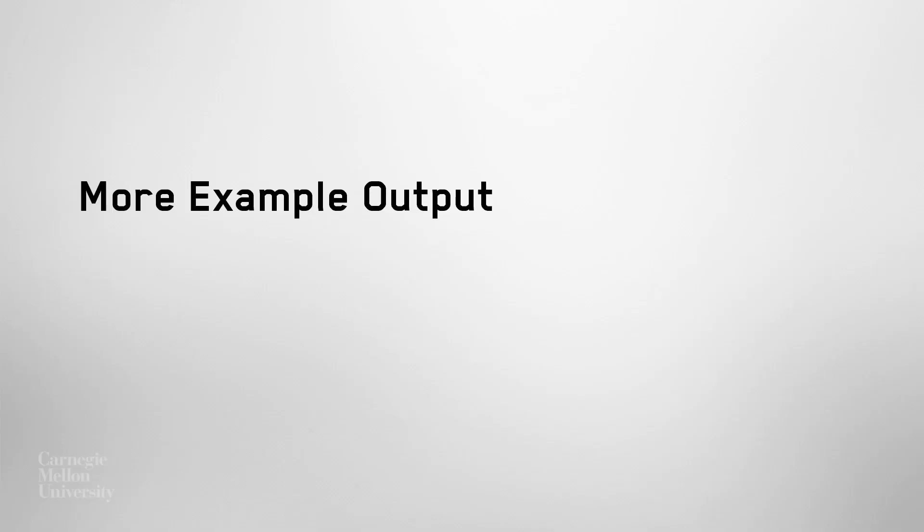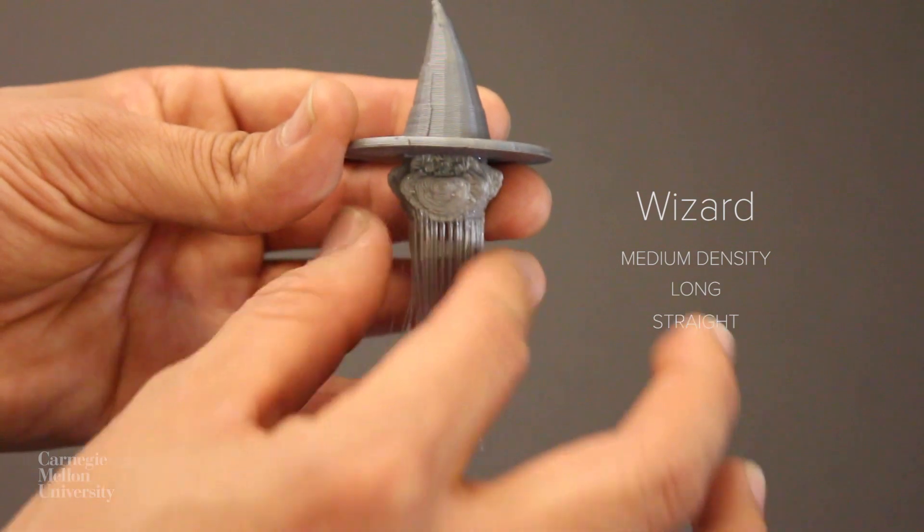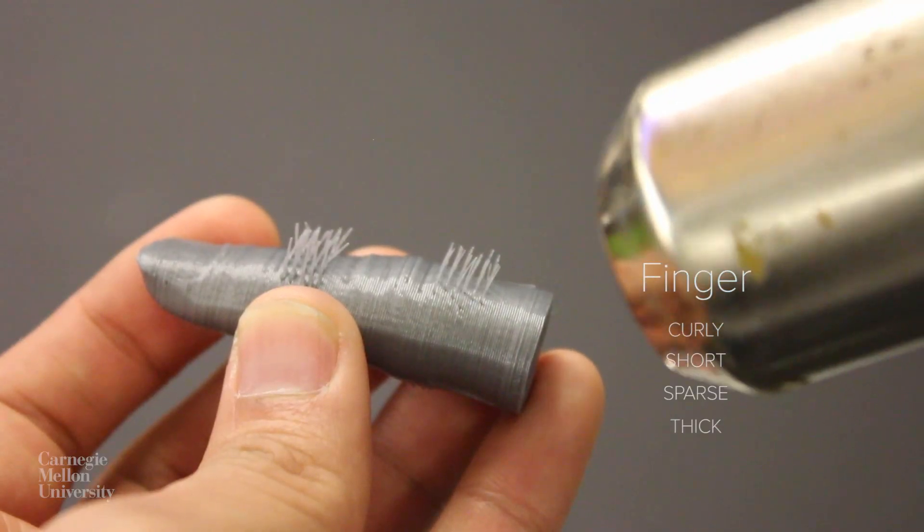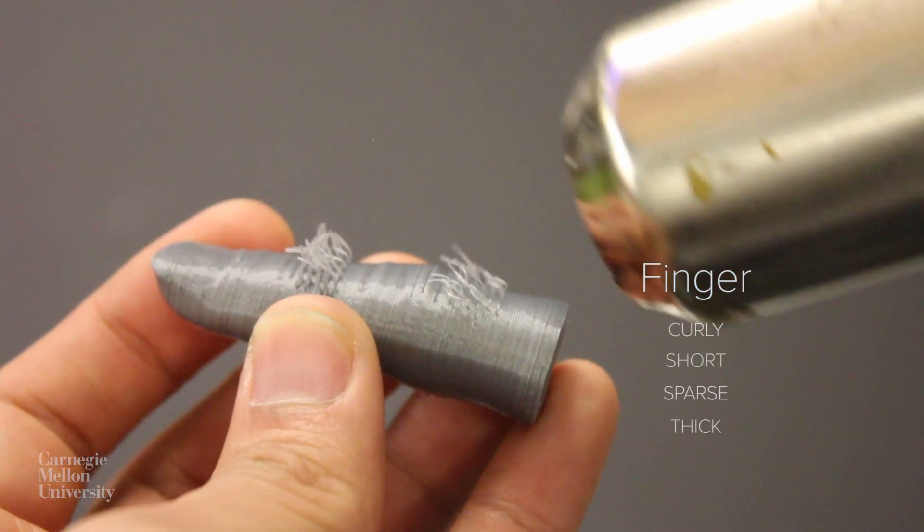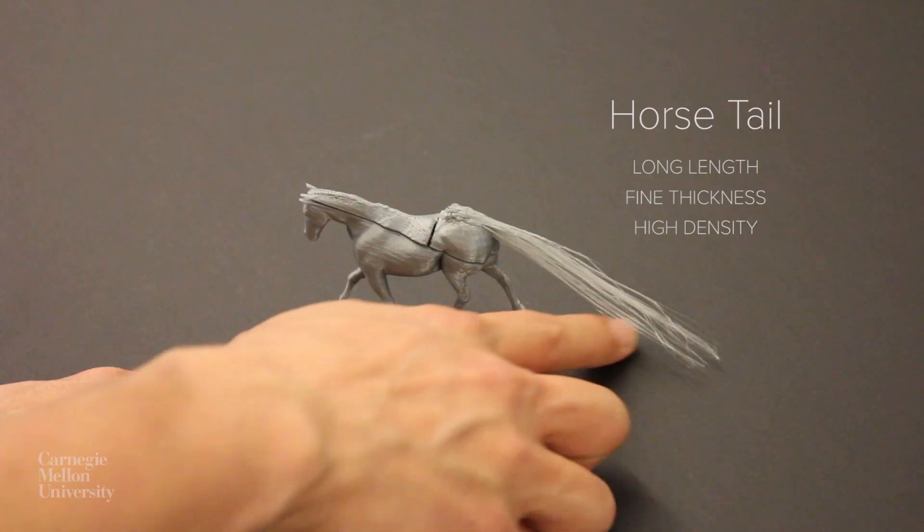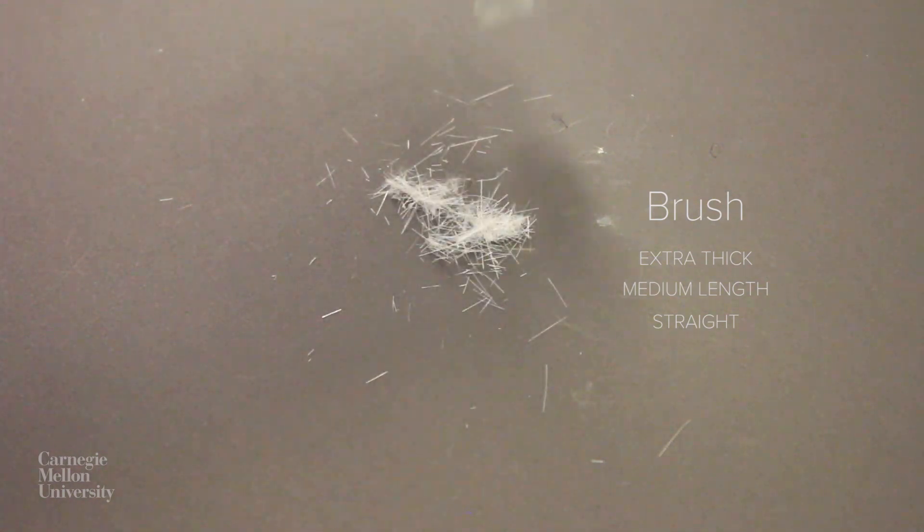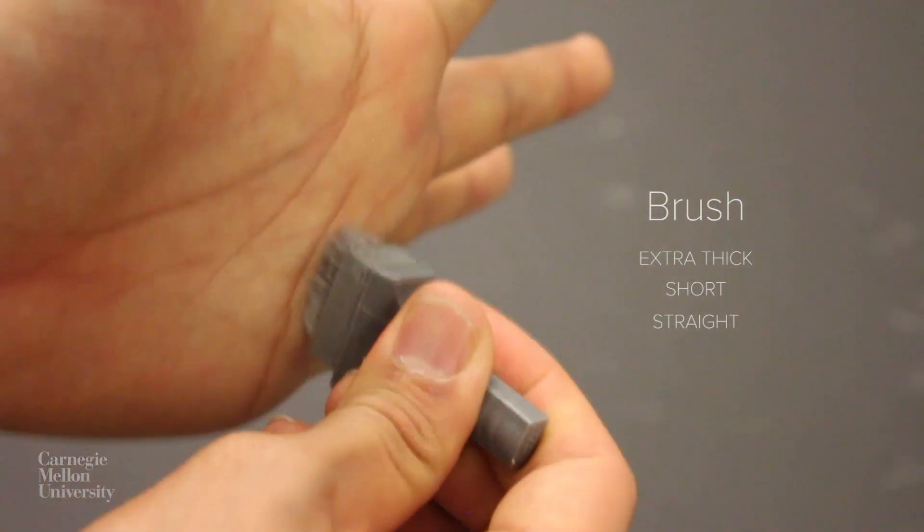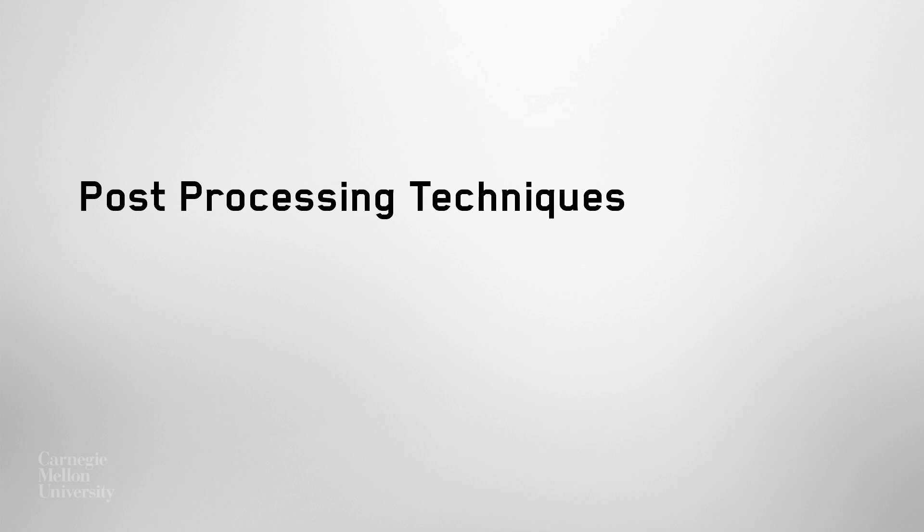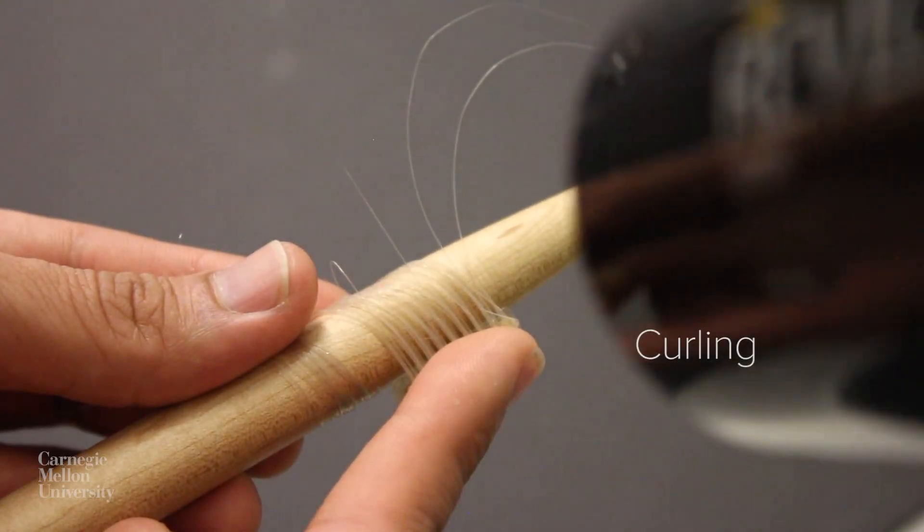Here we can see some example outputs such as a wizard, a finger with hair, a troll, a horse, and a brush with bristles. Like real hair, many post-processing techniques can be used, for example cutting, braiding, and curling.